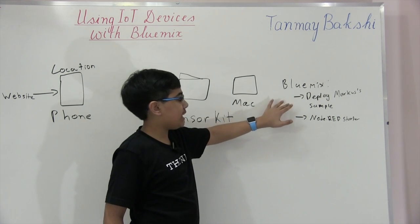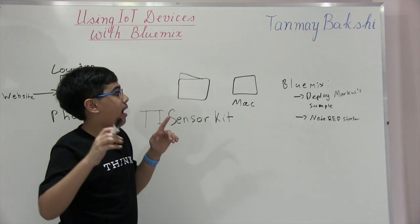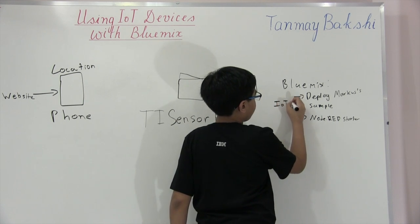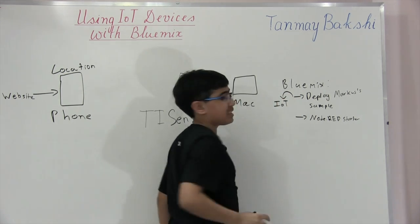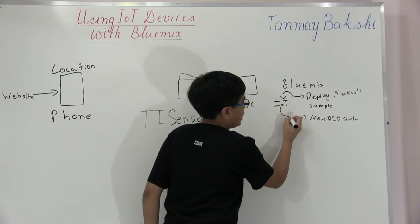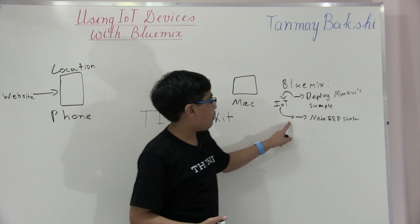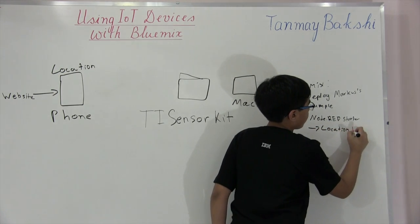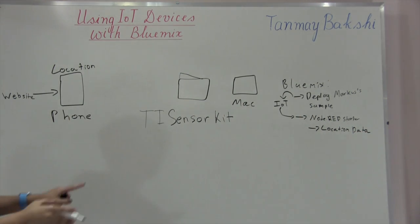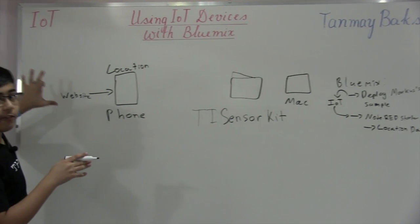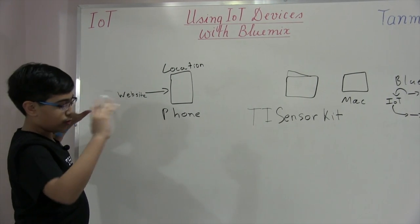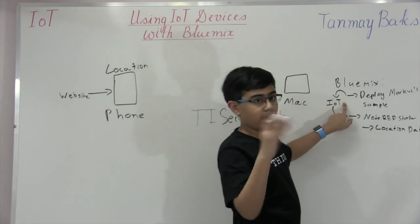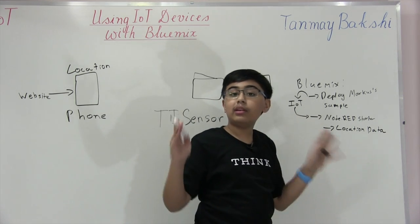The app also contains an IoT Starter Foundation Kit service, and that service can be connected with Node-RED. What I'm going to do is connect Marcus's deployed app to this IoT service, and then that IoT service into Node-RED. From Node-RED, we can then print out location sensor data. That's how we get location sensor data from our phone — whether Android or iOS — put it into Bluemix, through the IoT Foundation Starter Kit service, and into the Node-RED starter, which prints out location data.